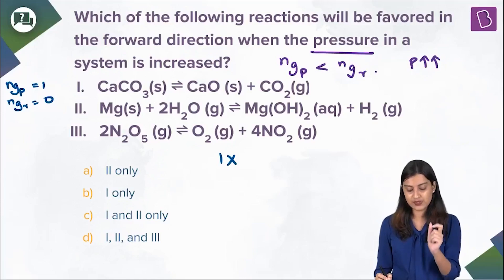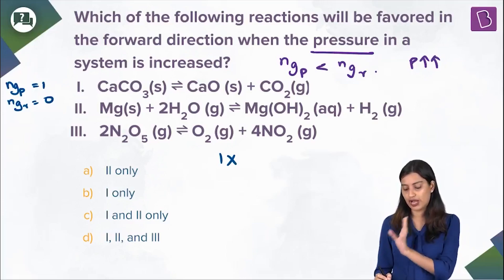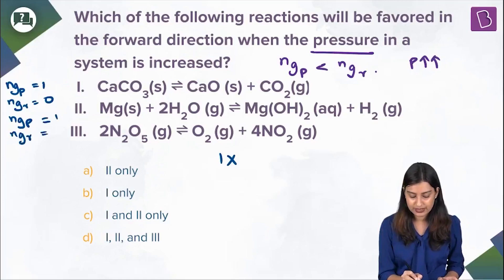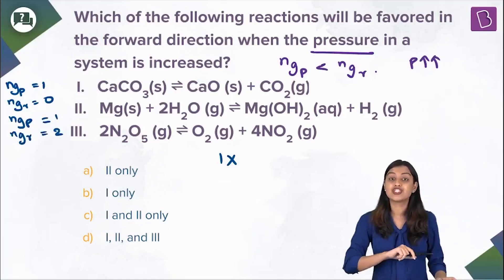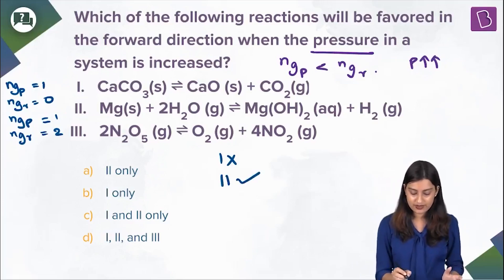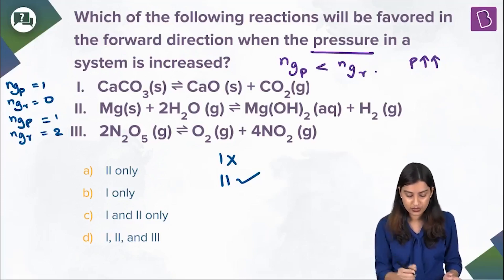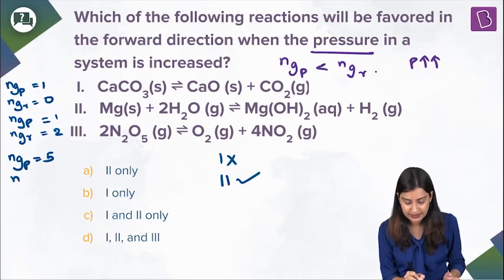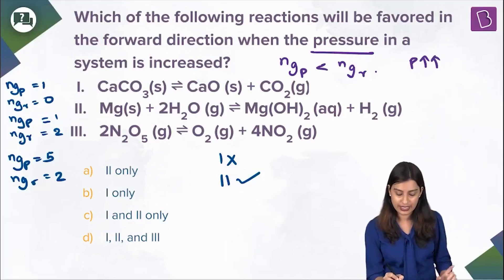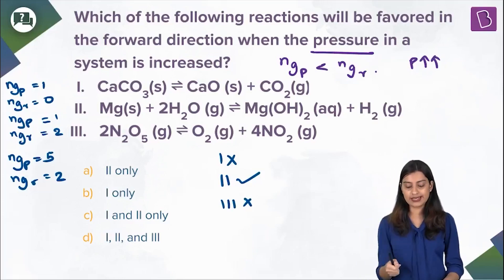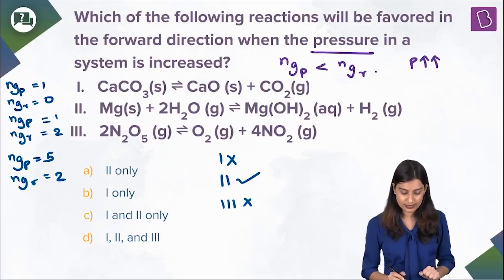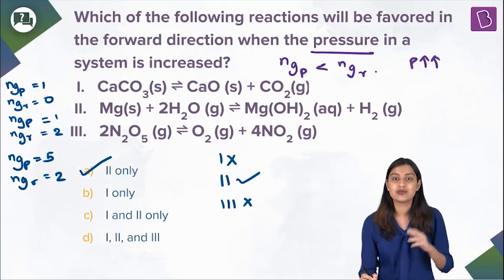Option 2: Mg(s) + H₂O(g) ⇌ Mg(OH)₂(aq) + H₂(g). Product side has 1 gaseous mole, reactant side has 1 gaseous — wait, reactant has 1 (H₂O gas) and product has 1 (H₂ gas)... actually the product side has 1 and reactant side has 1. But fewer gaseous moles on product side means forward is favored on pressure increase — this fits. Option 3: 2N₂O₅ ⇌ O₂ + 4NO₂ — product side has 5 gaseous moles vs. 2 on reactant side, so pressure shifts it backward. Therefore only case 2 is favored forward, and the answer is option A.